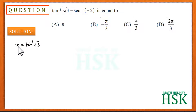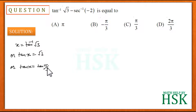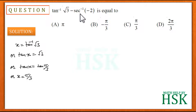For tan⁻¹(√3), I assume x = tan⁻¹(√3), which means tan(x) = √3. Since the value is positive, I can write x = π/3, because tan(60°) = √3 and 60° = π/3. Therefore, the principal value of tan⁻¹(√3) is π/3.